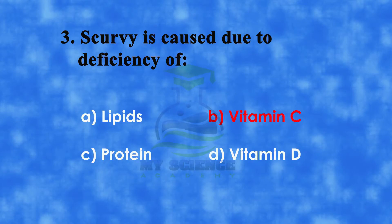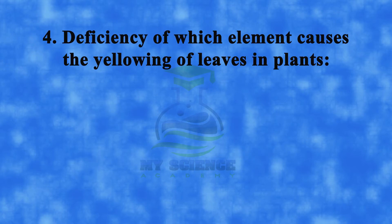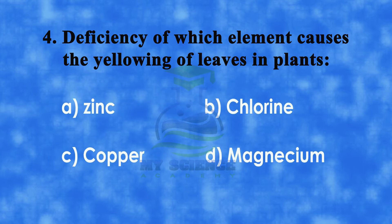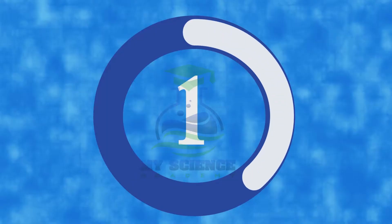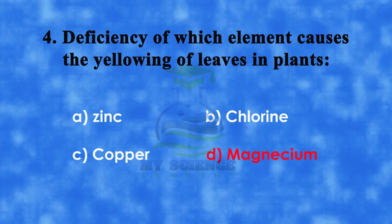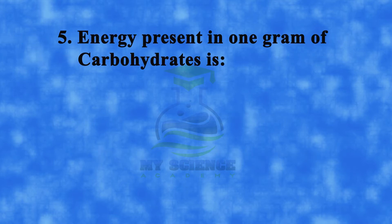The correct answer is b) vitamin C. Question number four: deficiency of which element causes the yellowing of leaves in plants? — a) zinc, b) chlorine, c) copper, or d) magnesium.